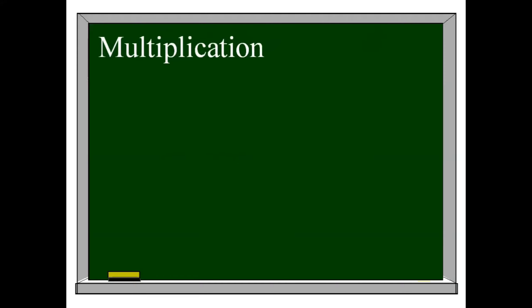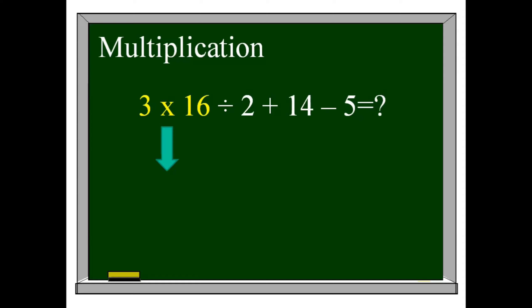Now let's proceed to the third step: Multiplication. In our expression we have 3 times 16. 3 times 16 gives us 48. Don't forget to write the remaining components of your expression.